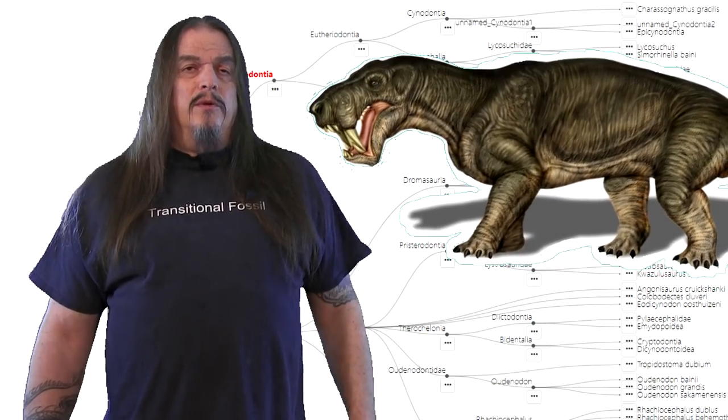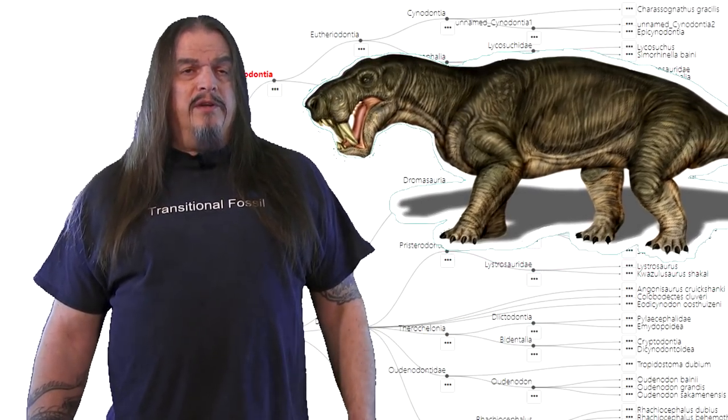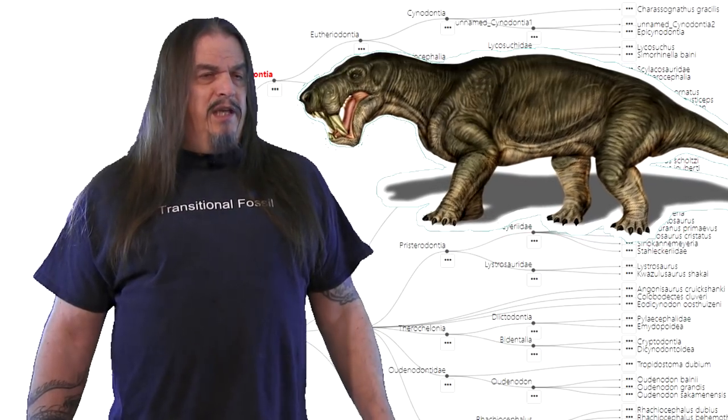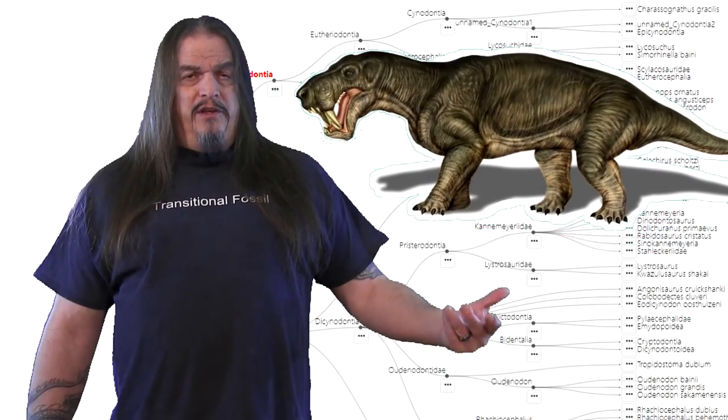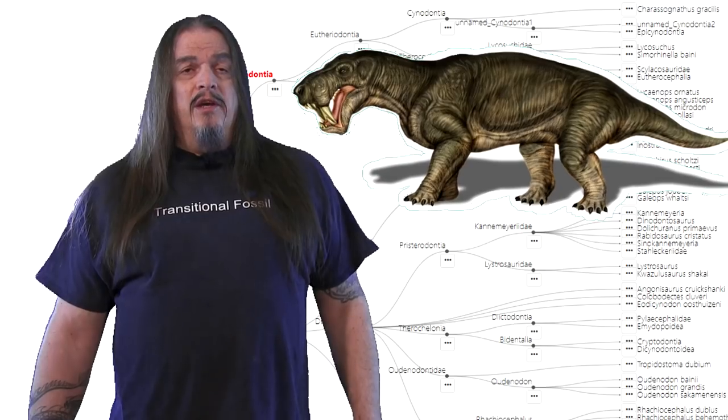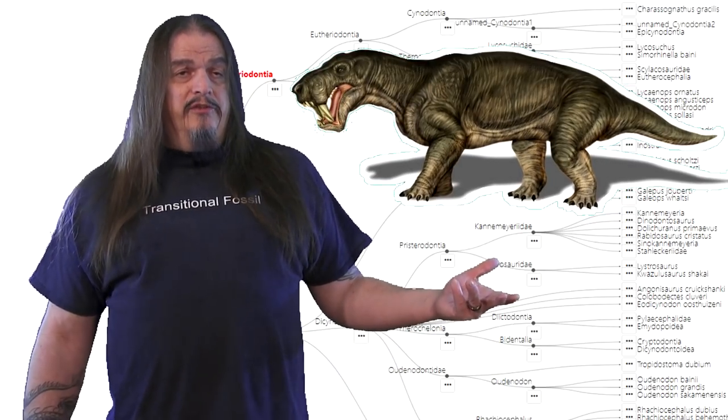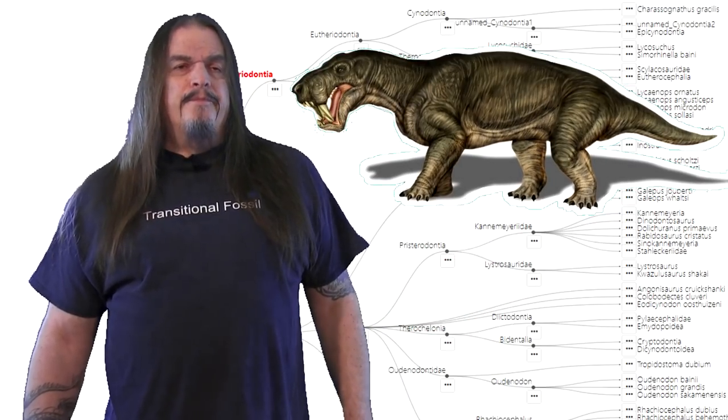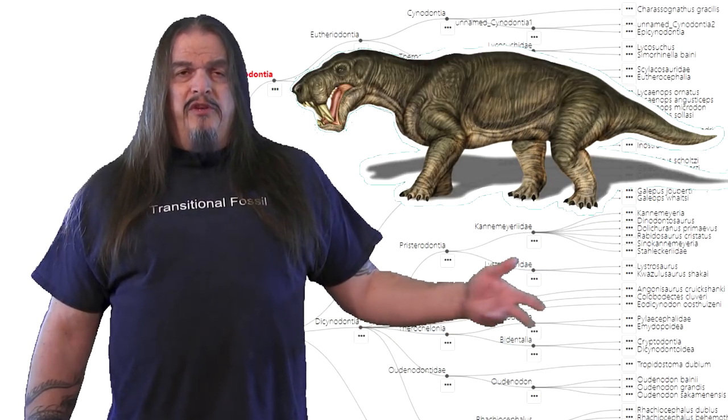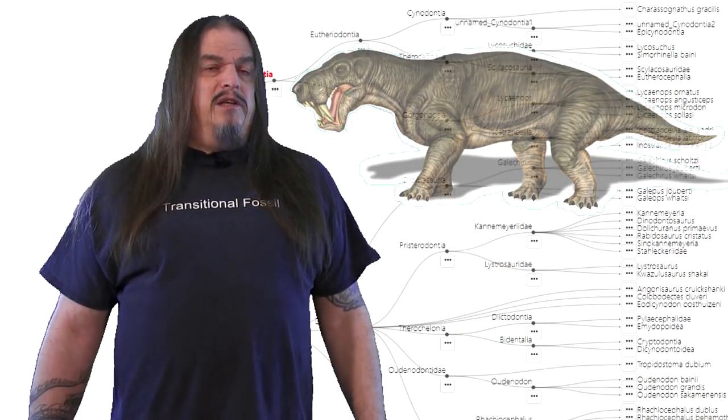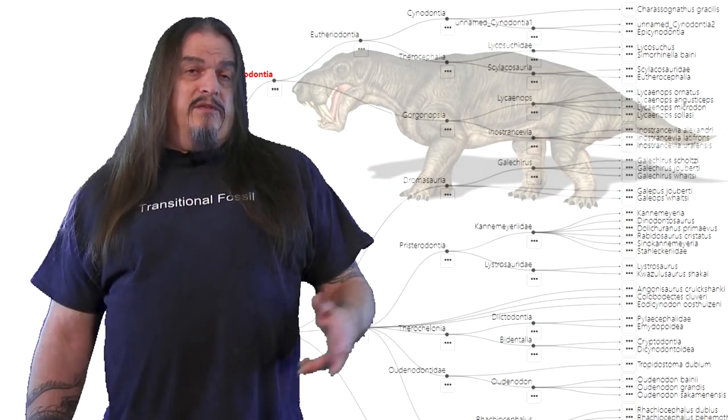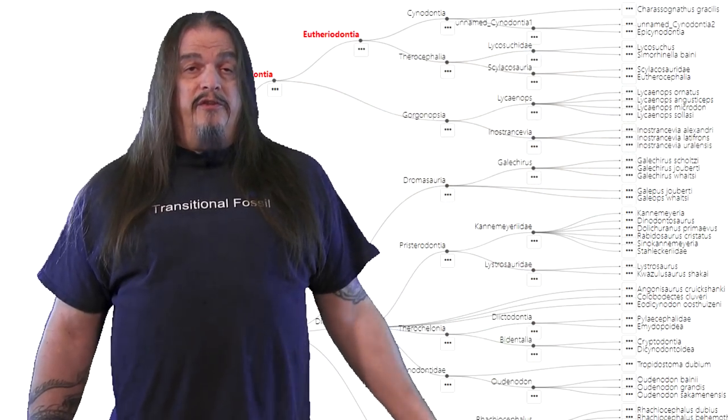These monstrous forms ride the line between what we think of as reptiles and what we know as mammals, being neither and yet a percentage of both. Perfect examples of transitional species, such that what once looked like a lizard now looks more like a dog. These pseudo-semi-reptilian quasi-mammalian chimeras are also only one side of the theriodont family tree, the other side being eutheriodonts.